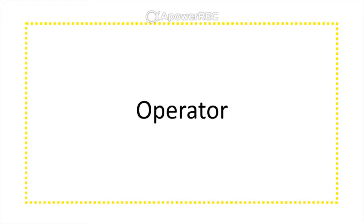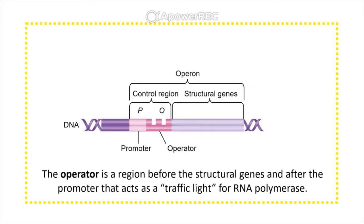The operator is a component of the control region of an operon. The control region regulates the transcription of the structural genes that follow. The operator specifically acts as a traffic light for RNA polymerase — RNA polymerase can bind to the promoter but cannot move forward with transcription unless the operator allows it. It can be normally off and induced to turn on, or normally on and repressed into a red light, stopping transcription.